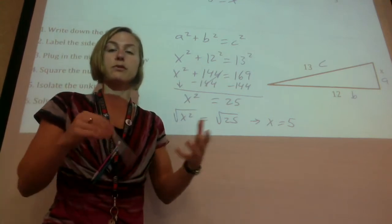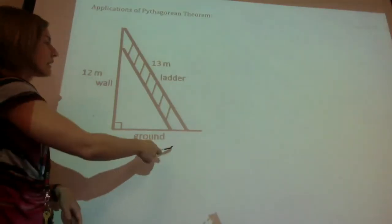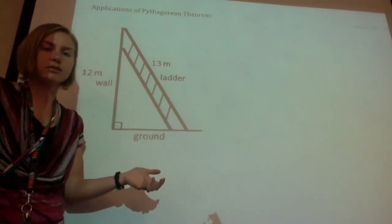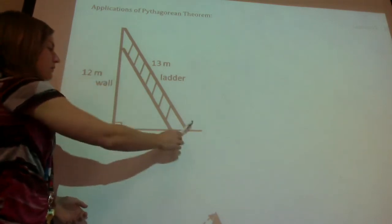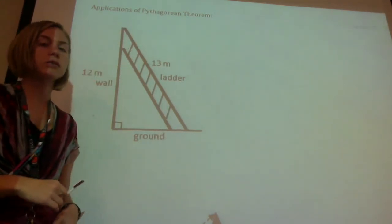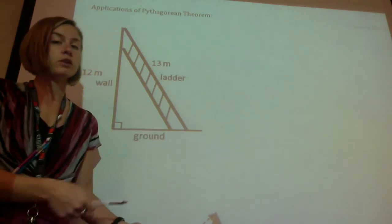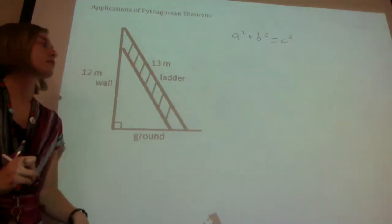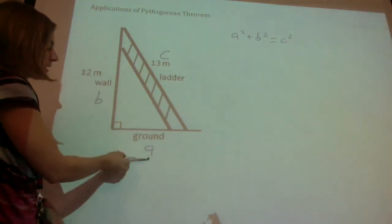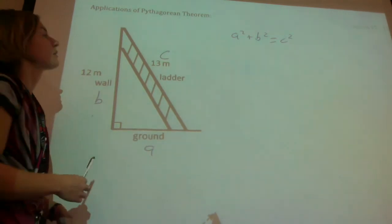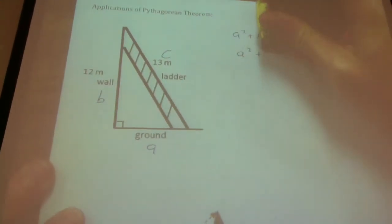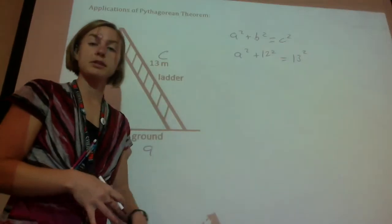Let's take a look at some examples of real-life situations. Here we have a ladder being leaned up against a wall, and we're trying to find out how far away the ladder is from the wall. This is the exact same thing we've been doing — we have a right triangle with a missing side length, a hypotenuse, and one of the shorter sides. So we just go through the normal steps. Step one: write down the formula. Step two: label the side lengths. A and B can be switched.